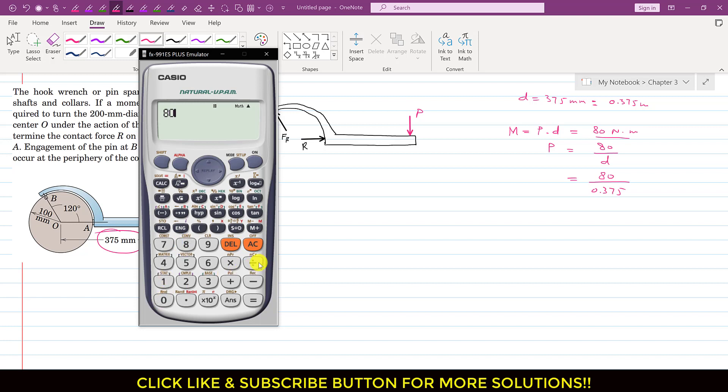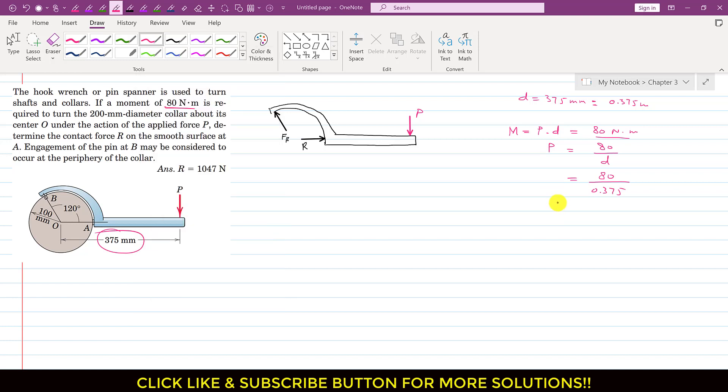So now we can write that P equals 80 divided by 0.375, which equals 213.33 Newtons. So this P force is equal to 213.33 Newtons.